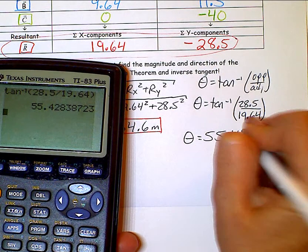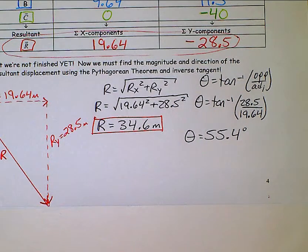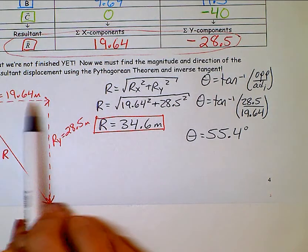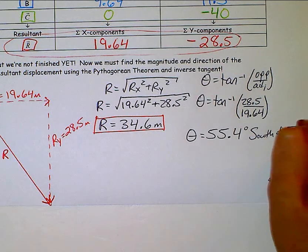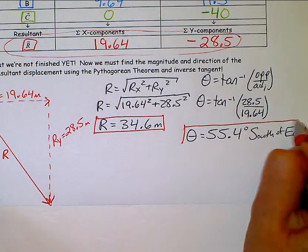But I can't just randomly say 55.4 degrees. I need a direction. And so I'm going to trace my triangle that I have drawn. And I go east first and then south. So this will be south of east. So this is the location of the cow after all the walking around.